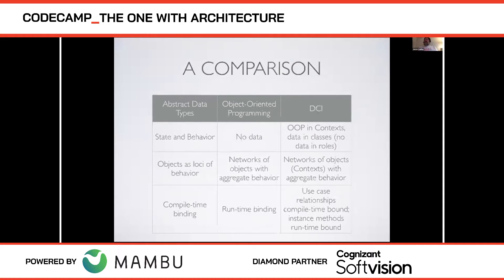Most people think of object-oriented programming as abstract data types with polymorphism or inheritance. But in Alan Kay's vision, there are no data — there are only objects, and objects are loci of behavior. Object-oriented programming is a style of creating networks of cooperating objects that work together to solve some problem for the end user.